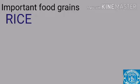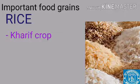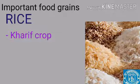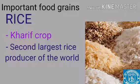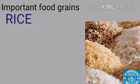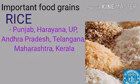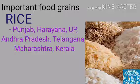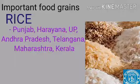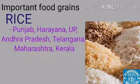The next food grain is rice. Rice is a Kharif crop and the most staple food of the majority of India's population. India is the second largest producer of rice in the world after China. Important rice-growing areas are Punjab, Haryana, Western UP, Andhra Pradesh, Telangana, Maharashtra, and Kerala. Rice requires about 100 centimeters of annual rainfall, high temperature, and is mostly grown during the monsoon season.